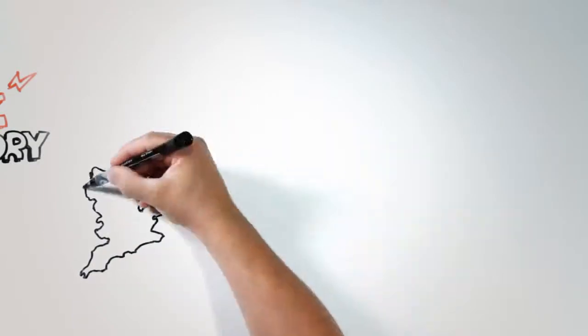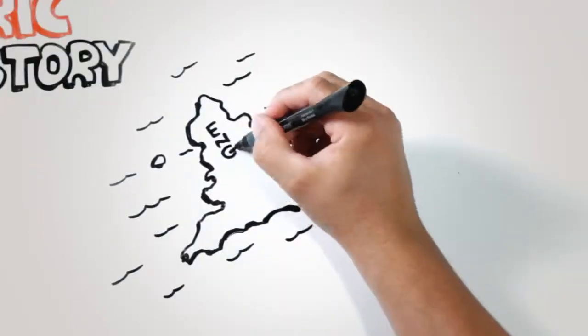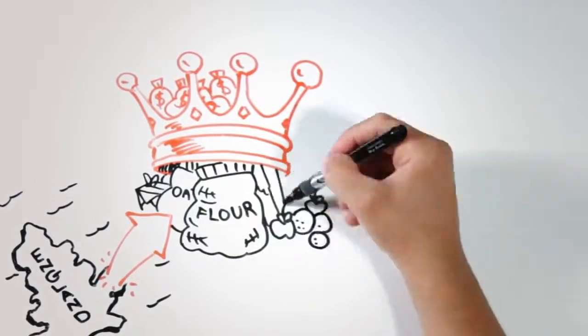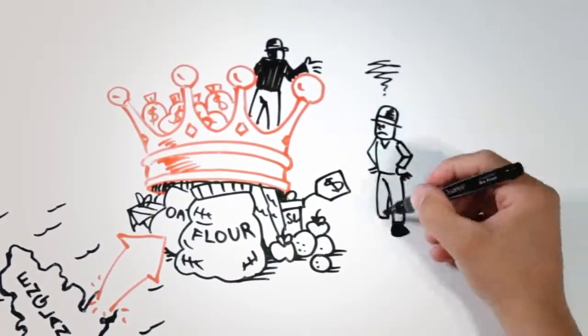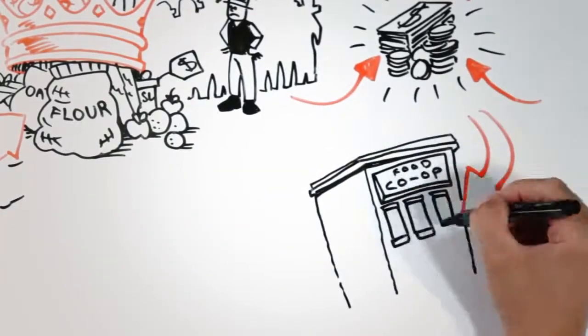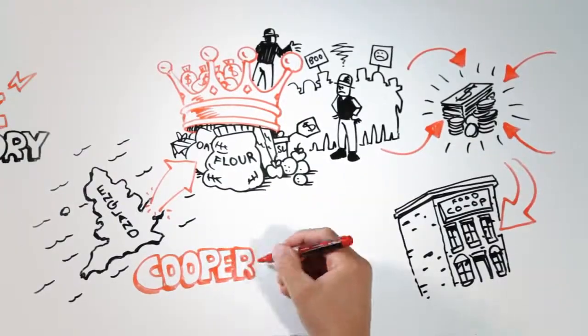Our story starts back in 1844 in not-so-merry England, where a group of weavers fed up with the high price of company store groceries pooled their money to buy their own food, creating a new form of business: the cooperative. The idea caught on here in the US.